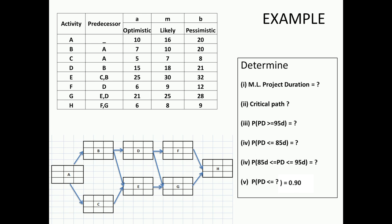Let us work out an example here. The inputs are activities A to H, given the predecessor relationship, the optimistic duration in days, the most likely duration, and the pessimistic duration. This is your basic input information. So what are the questions we can ask when we are given this?